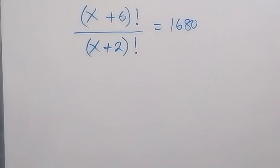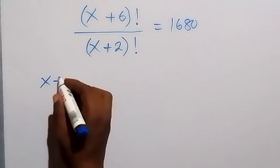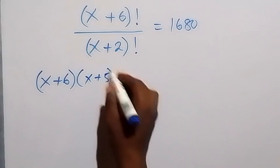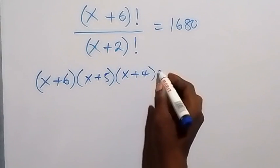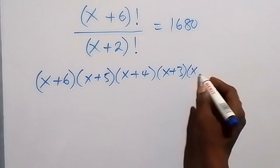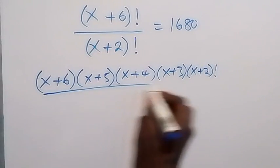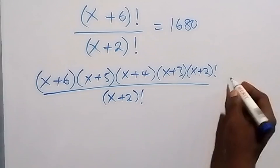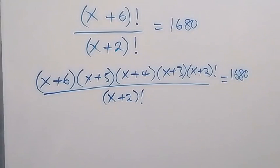We can write (x + 6)! as (x + 6) × (x + 5) × (x + 4) × (x + 3) × (x + 2)!, then divided by (x + 2)!, which equals 1680.